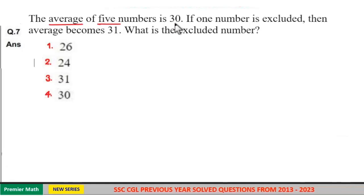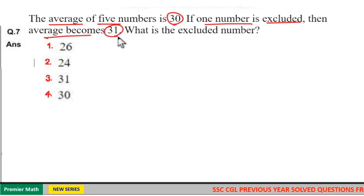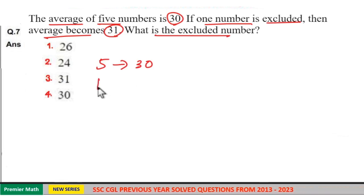The average of five numbers is 30. If one number is excluded then the average becomes 31. What is the excluded number? Here five numbers average is 30, and if one number excluded, means remaining four numbers average is 31.